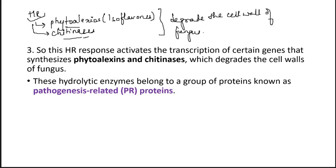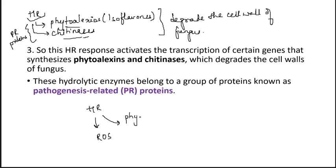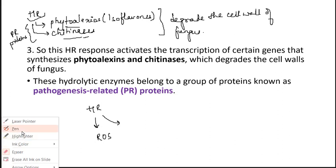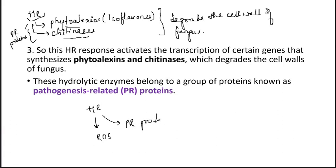These phytoalexins and chitinases are a group of proteins named PR proteins. Hypersensitive response activates ROS and also activates PR proteins. PR proteins include chitinases and phytoalexins. Now we will study about phytoalexins in detail.